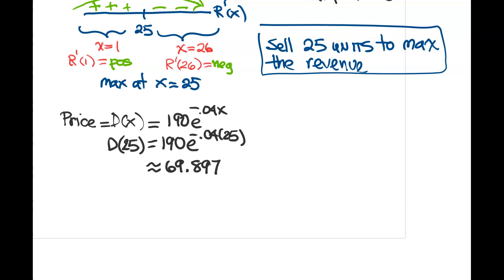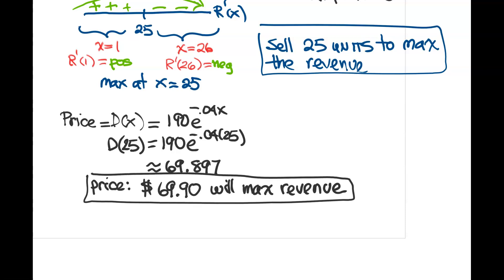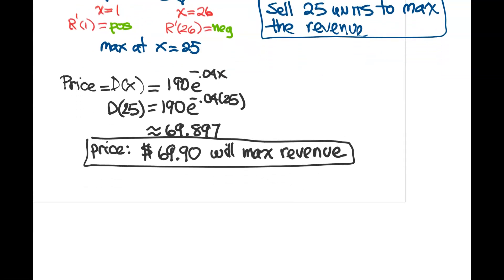Because this is money, I'm going to round that to dollars. So I'm going to say the price is about $69.90. So this price will max your revenue. When you set the price at the $69.90, you're going to end up selling 25 units, and that's going to give you your max revenue. Well, I hope this has been helpful.